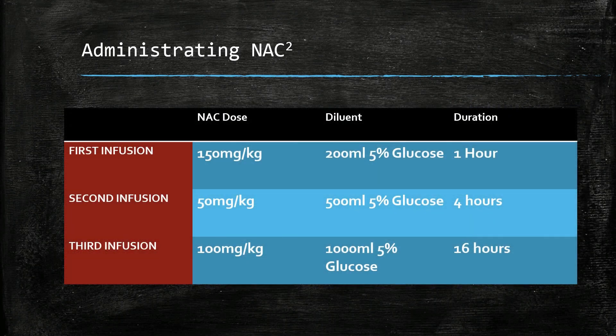How do we administer NAC in practice? Beginning with the first infusion, which lasts one hour: 150 milligrams per kg of NAC diluted in 200 millilitres of 5% glucose. This is followed by a second infusion of 50 milligrams per kg diluted in 500 millilitres of 5% glucose lasting four hours. The final infusion uses 100 milligrams per kg diluted in 1000 millilitres of 5% glucose given over 16 hours.